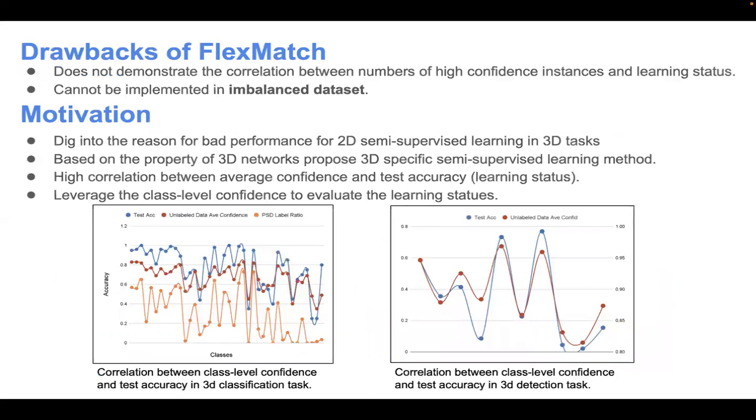However, we still find some drawbacks for FlexMatch. First, it doesn't demonstrate the correlation between the number of high-confidence instances and learning status. Second, it cannot be implemented on imbalanced datasets.